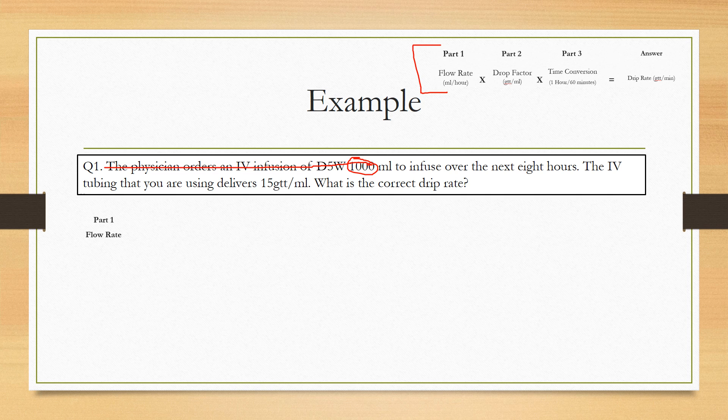It's 1,000 milliliters you're infusing into the patient over the next eight hours. So what you're going to do is you're going to do 1,000 divided by eight and that's going to give you your flow rate. And what that gives you is 125 milliliters per one hour.